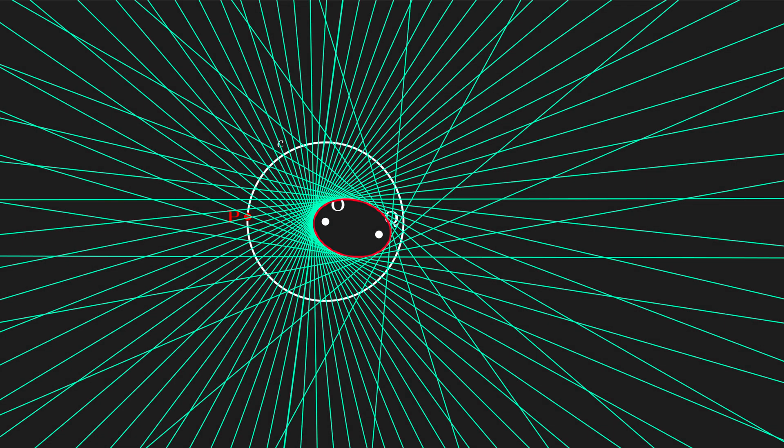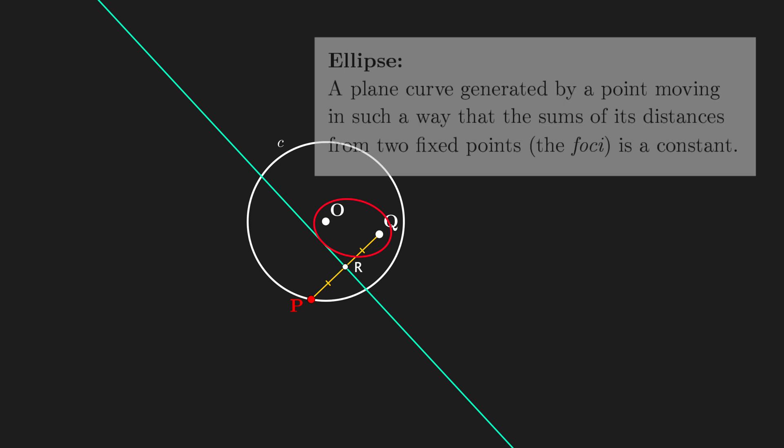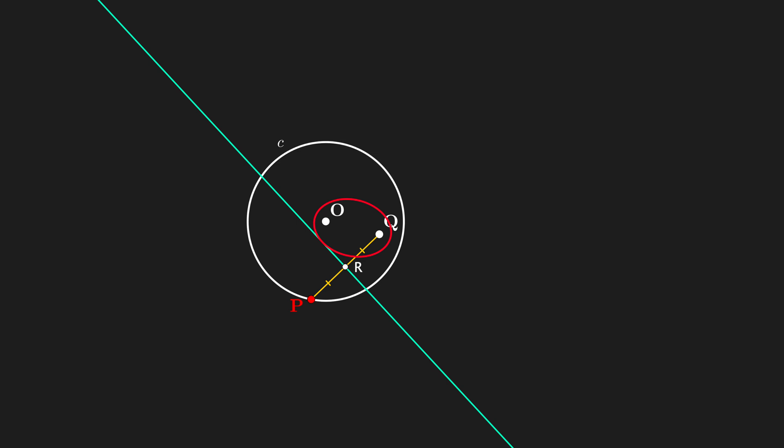When Q is inside the circle, again, it is easy to show that the envelope is an ellipse. An ellipse is a planar curve generated by a point moving in such a way that the sum of its distances from two fixed points, the foci, is a constant. Again, the foci are the points O and Q, and to find the point that generates the ellipse, draw the auxiliary line passing through the center O and the point P.